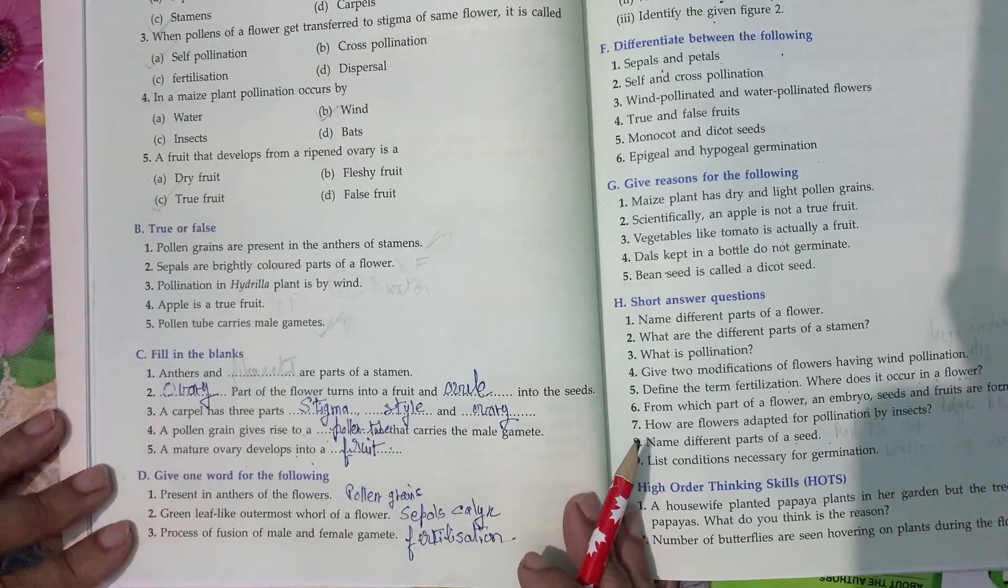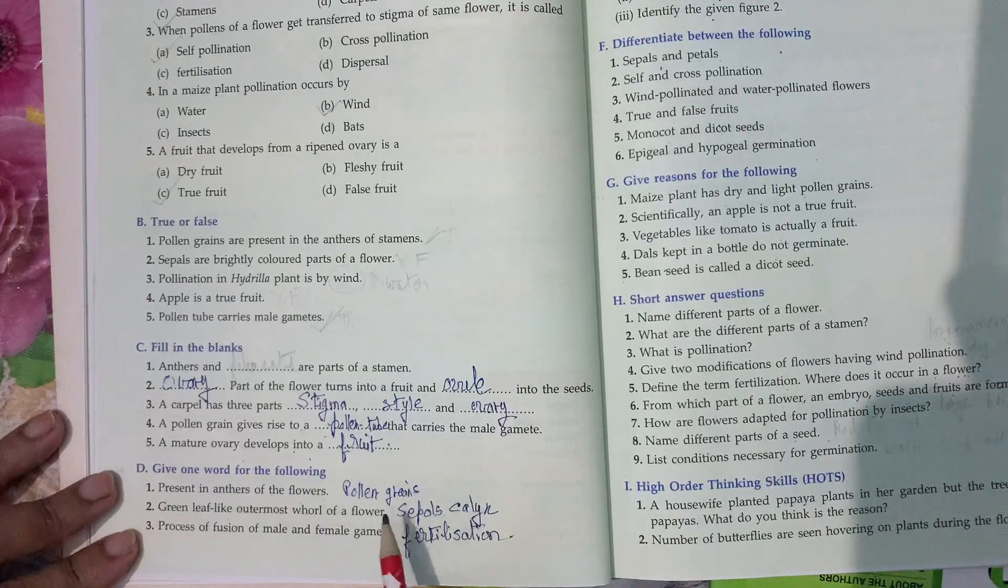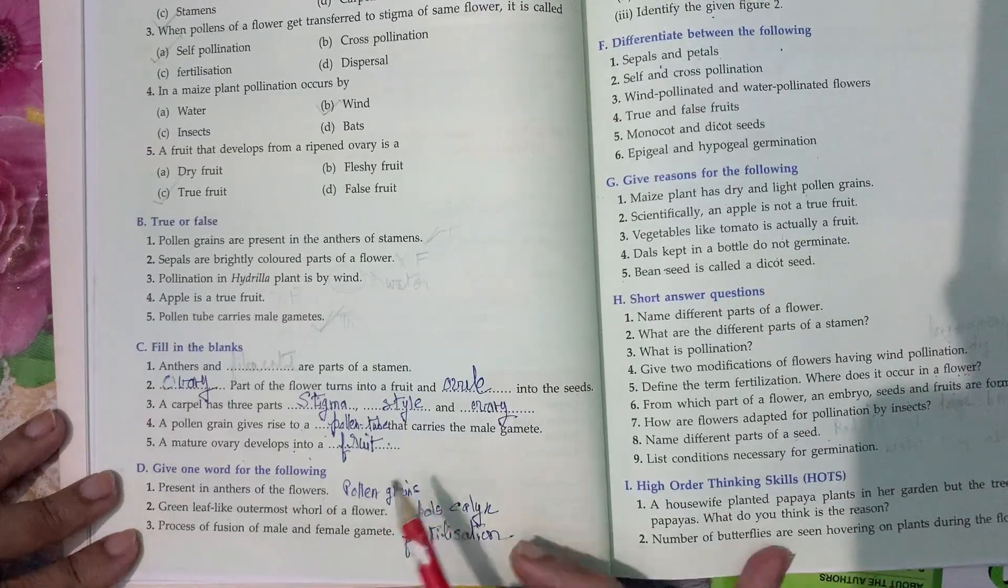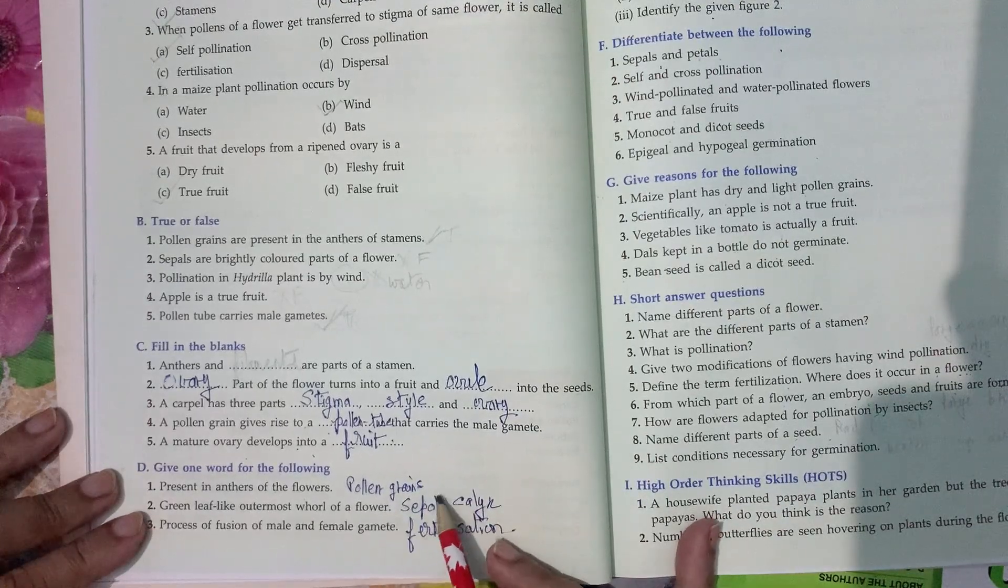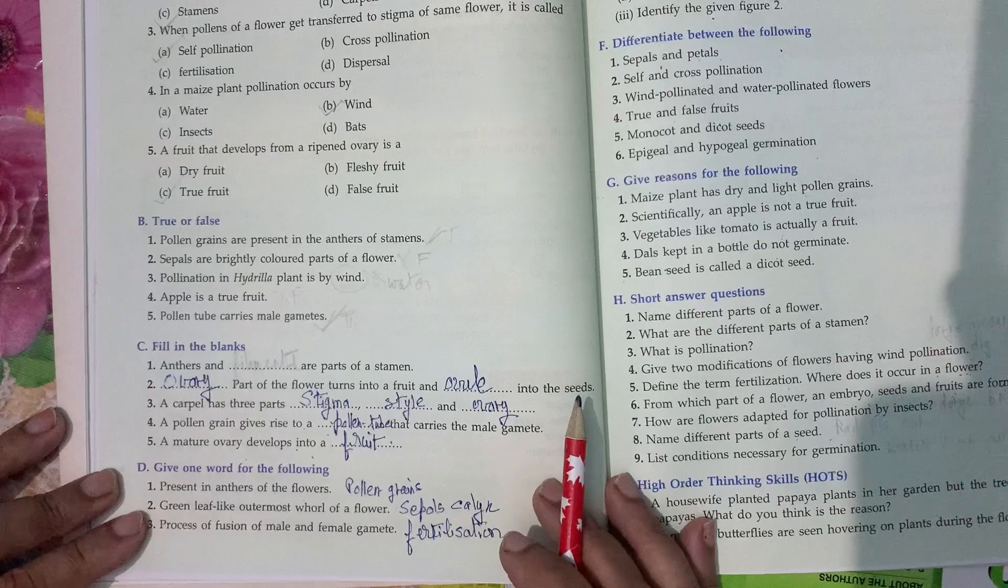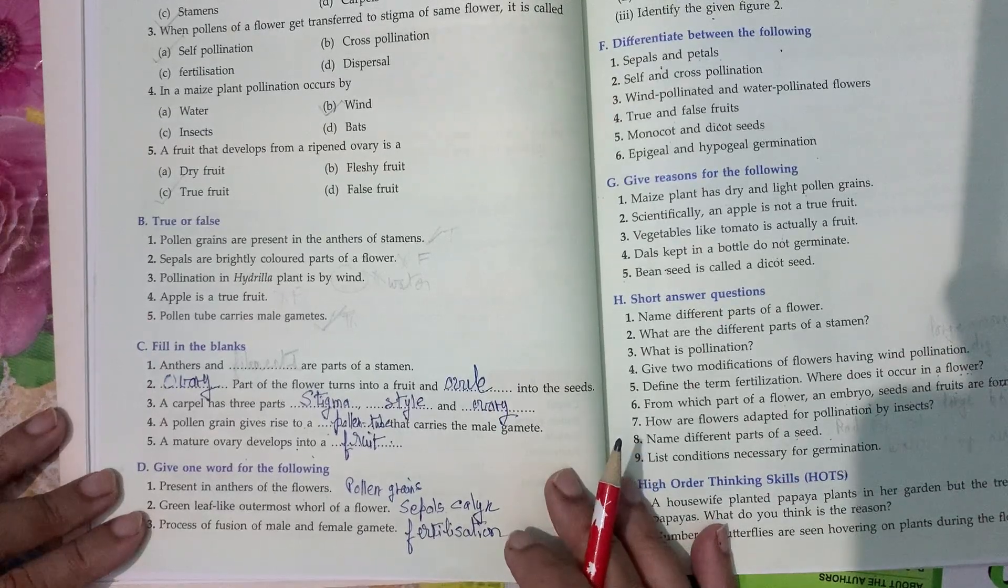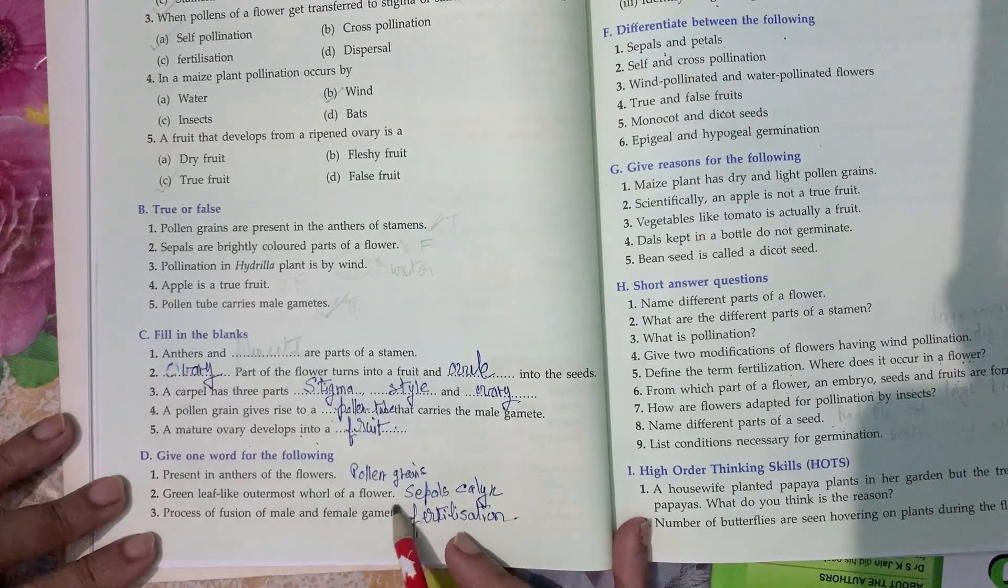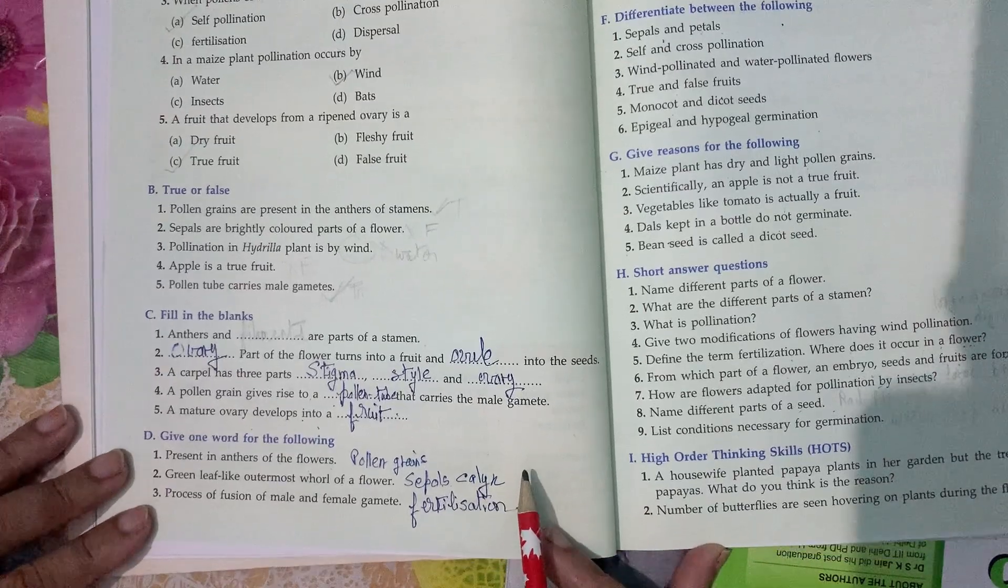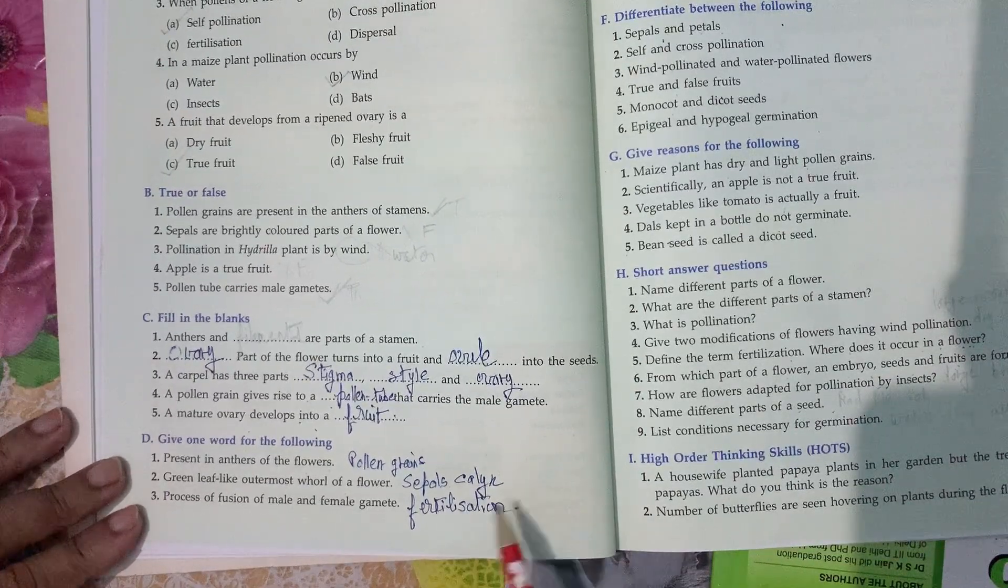Now, give one word for the following. First, present in the anther. What is present in the anther of a flower? Pollen grains. Second, green leaf-like outermost whorl of a flower. Sepals, and it is also known as calyx, the green outermost whorl of a flower.